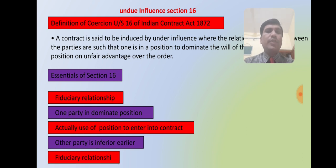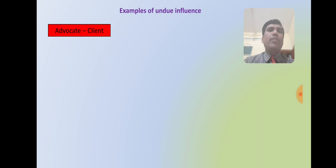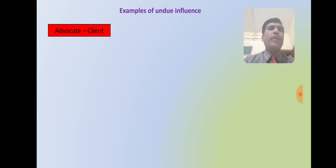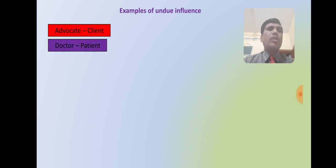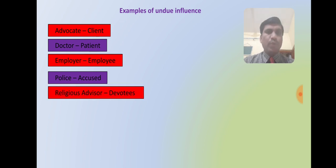Undue influence is a moral force used by one party against the other. Examples where there is a possibility of undue influence include: advocate and client, doctor and patient, employer and employee, police and accused, and religious advisor and devotees.